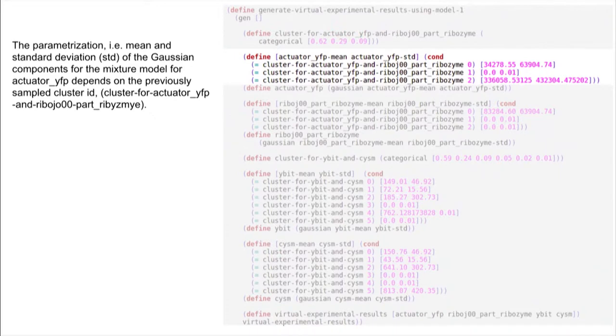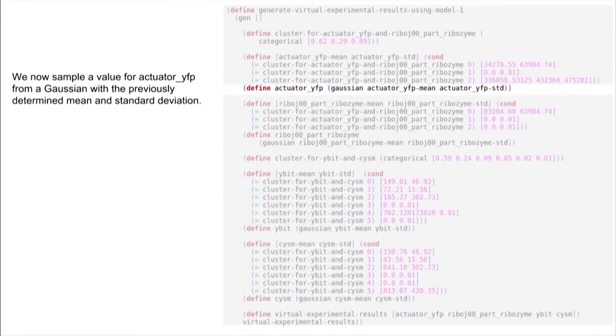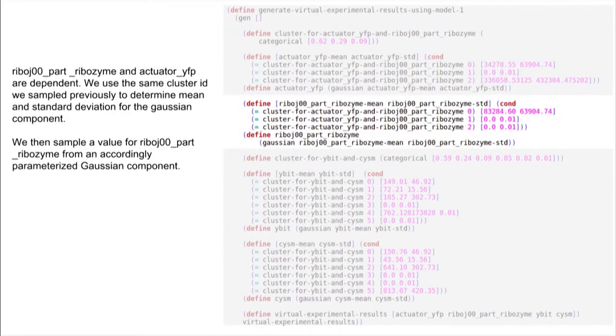Next, we take this cluster ID and define which parameters for the Gaussian mixture. Five minutes? Okay. I'll speed up. And we define which parameters we need to sample a new value for my Gaussian, which happens here. I said before that RIBO and YFP are actually dependent. So we take the same cluster ID and repeat the process.